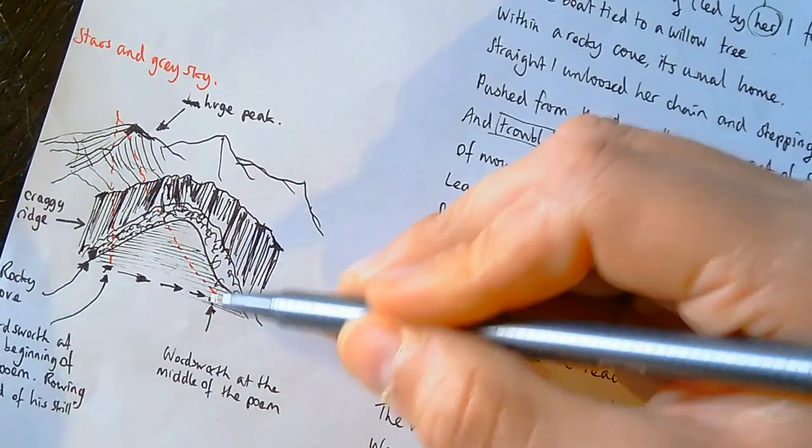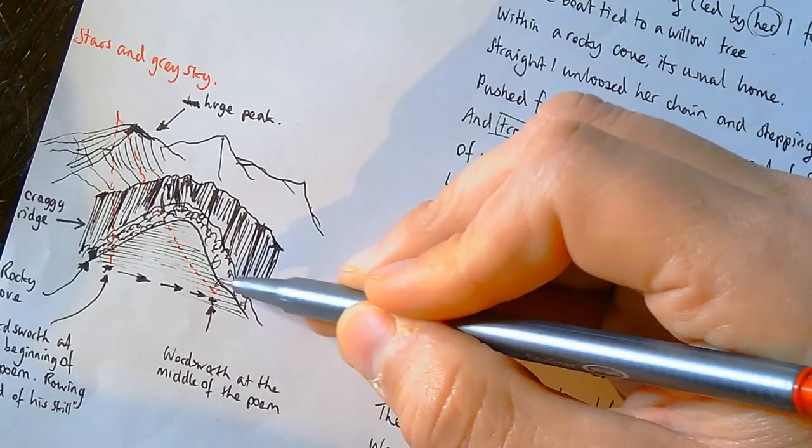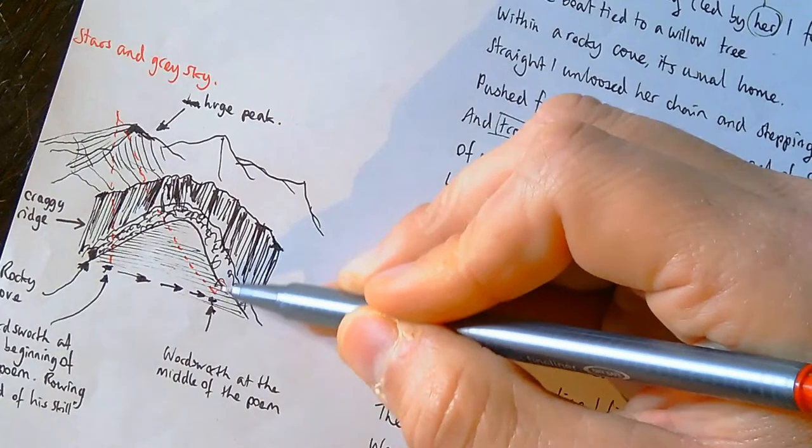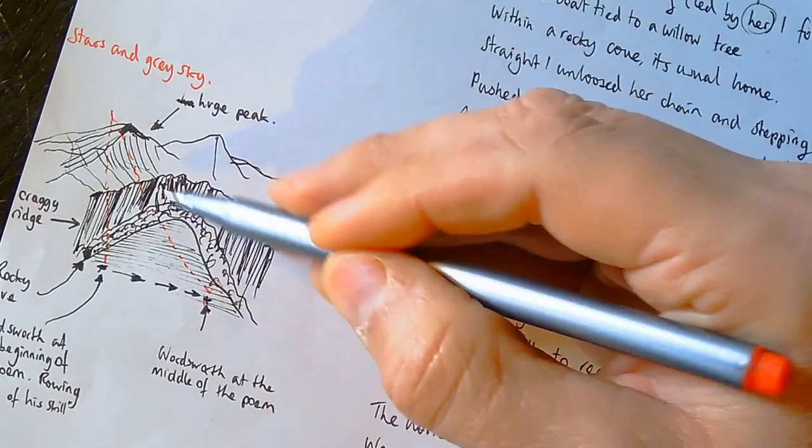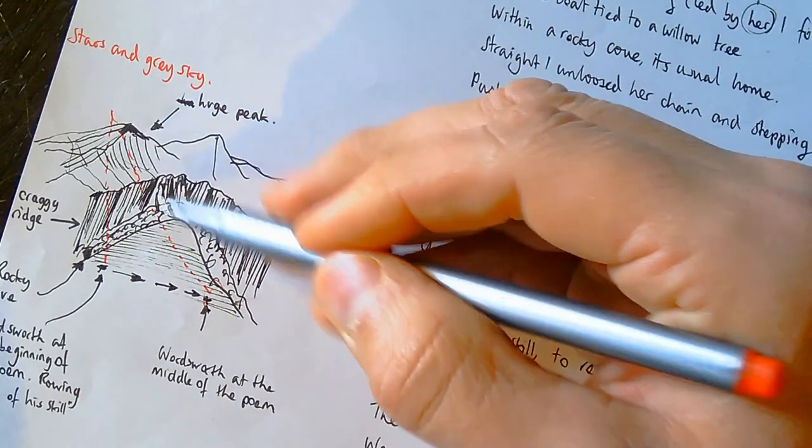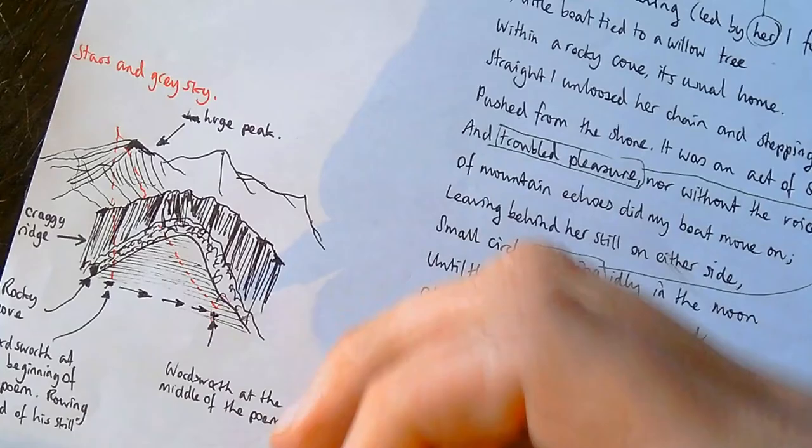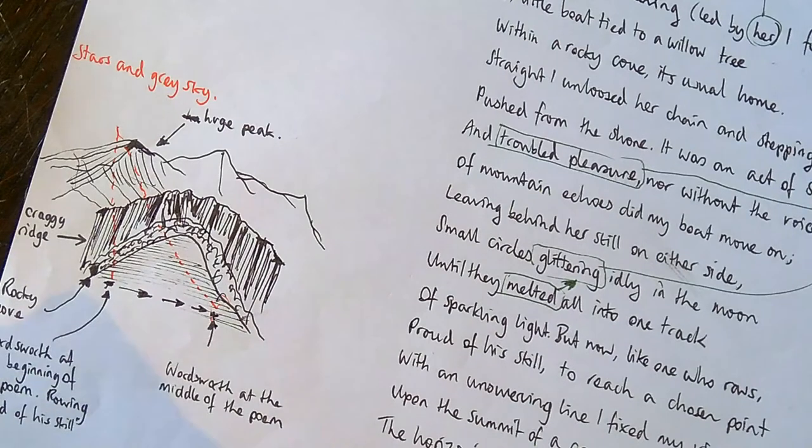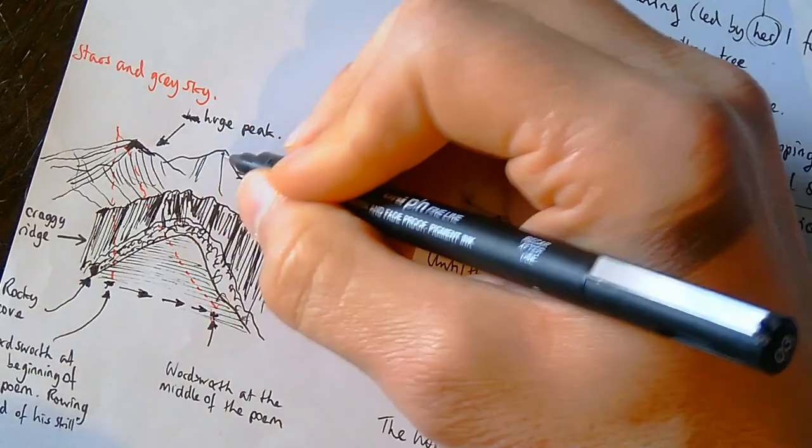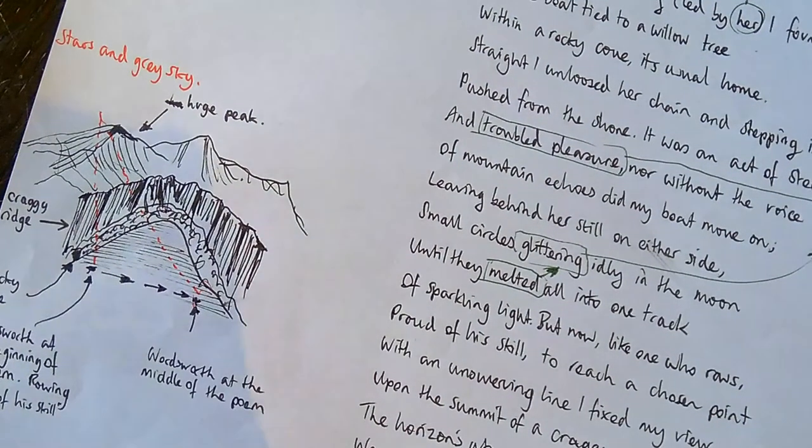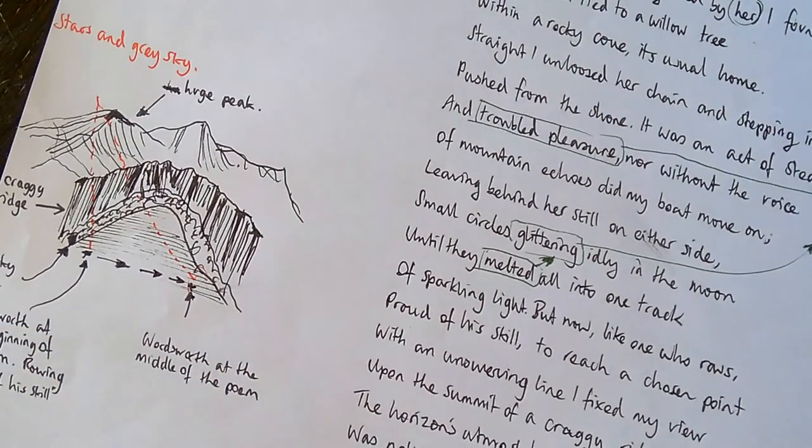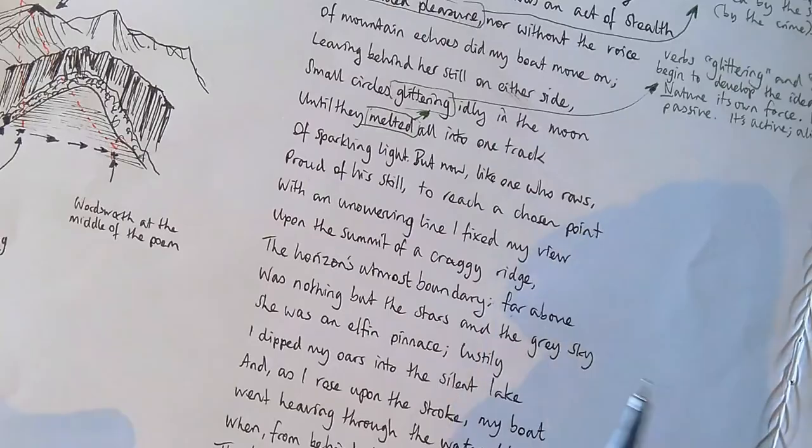And I could just write here, craggy ridge, that is the craggy ridge right there. And I could maybe put down here, just where Wordsworth stole the boat from, known in the poem as a rocky cove. There is a little arrow to the rocky cove where he stole the boat from. And looking at, I imagine now, a little Wordsworth, there's a rowing boat. Believe it or not, if I can zoom in even more, that there is a rowing boat. And in it, I've got a little Wordsworth. And this is near the beginning of the poem. So an arrow there. And I will write Wordsworth at the beginning of the poem. And he is rowing proud of his skill. So rowing proud of his skill.